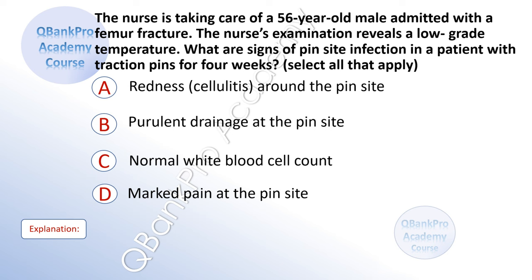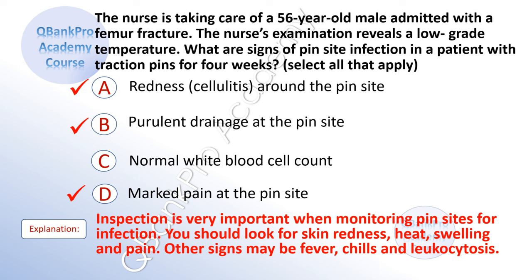The nurse is taking care of a 56-year-old male admitted with a femur fracture. The nurse's examination reveals a low-grade temperature. What are signs of pin site infection in a patient with traction pins for four weeks? Select all that apply. A. Redness and cellulitis around the pin site. B. Purulent drainage at the pin site. C. Normal white blood cell count. D. Marked pain at the pin site. Explanation: inspection is very important when monitoring pin sites for infection. You should look for skin redness, heat, swelling, and pain. Other signs may be fever, chills, and leukocytosis.